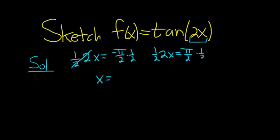So we get x equals negative pi over 4. And here we get x equals pi over 4. And these are going to be our vertical asymptotes.